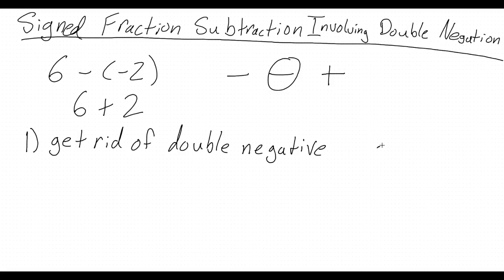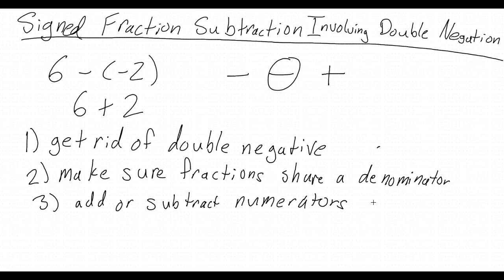The first step in that is to make sure the two fractions share a denominator. After we have a shared denominator, we can add or subtract the numerators. After you've added or subtracted the numerators, you end up with the final answer.